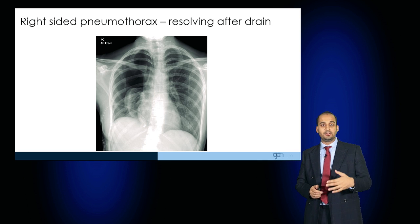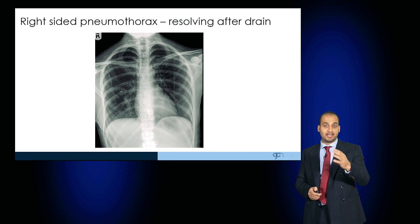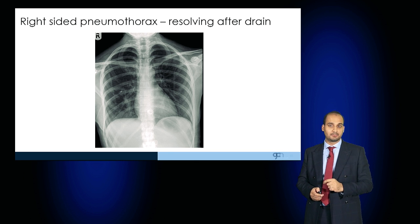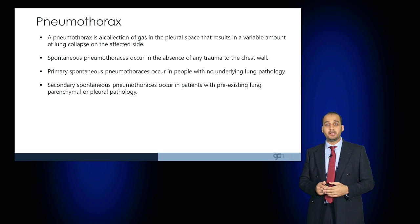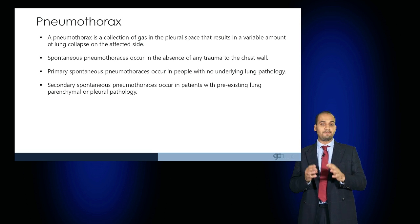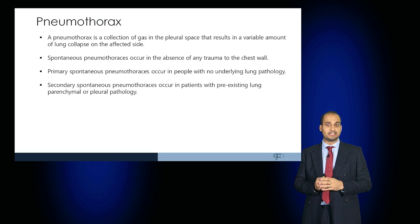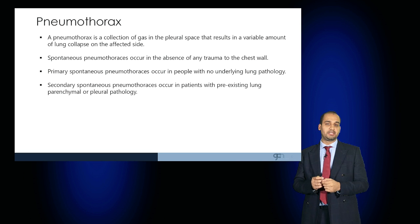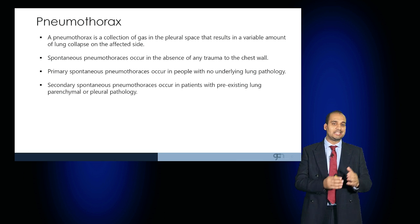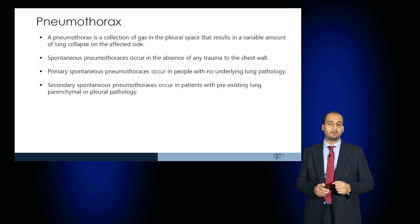Taking that further, you can see further resolution, and here almost complete resolution of that same pneumothorax. Remember that pneumothoraces are a collection of gas in the pleural space resulting in variable amounts of lung collapse on the affected side. Spontaneous pneumothoraces occur in the absence of trauma. Primary spontaneous pneumothoraces occur in people with no underlying lung disease, and secondary pneumothoraces occur in patients with pre-existing lung parenchymal or pleural pathology.